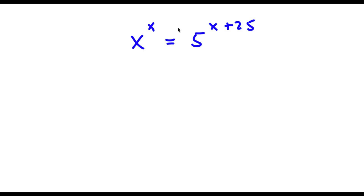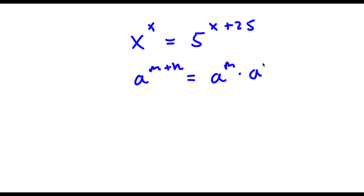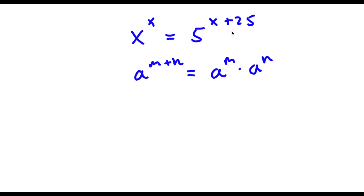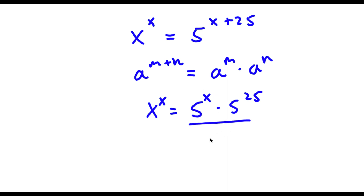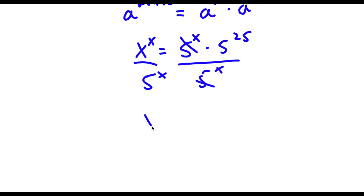Now for the second problem: x to the power of x equals 5 to the power of x plus 25. Using the rule that a to the power of m plus n equals a to the power of m times a to the power of n, I have 5 to the power of x plus 25 equals 5 to the power of x times 5 to the power of 25. Dividing both sides by 5 to the power of x, these two cancel, leaving x to the power of x over 5 to the power of x equals 5 to the power of 25.